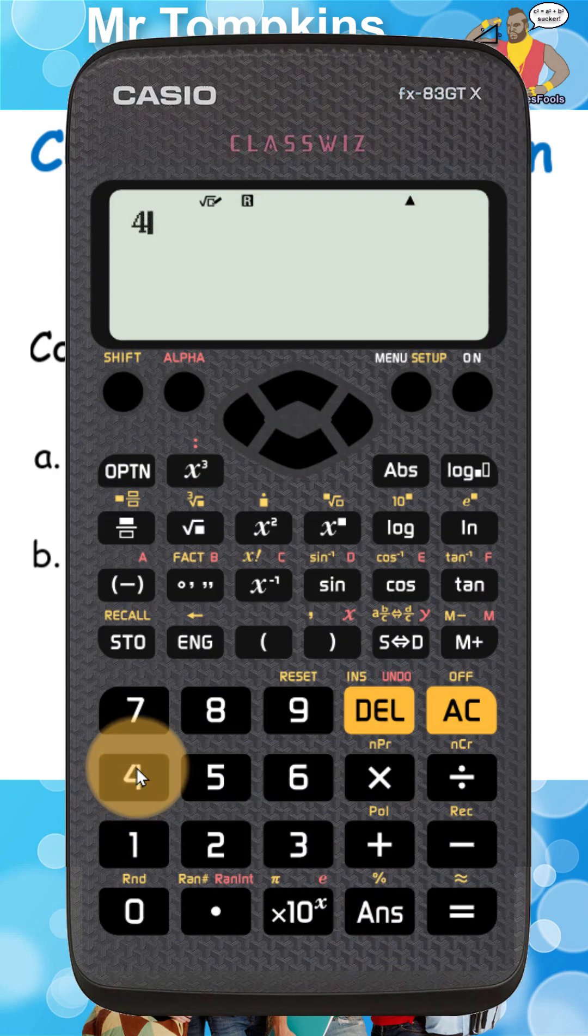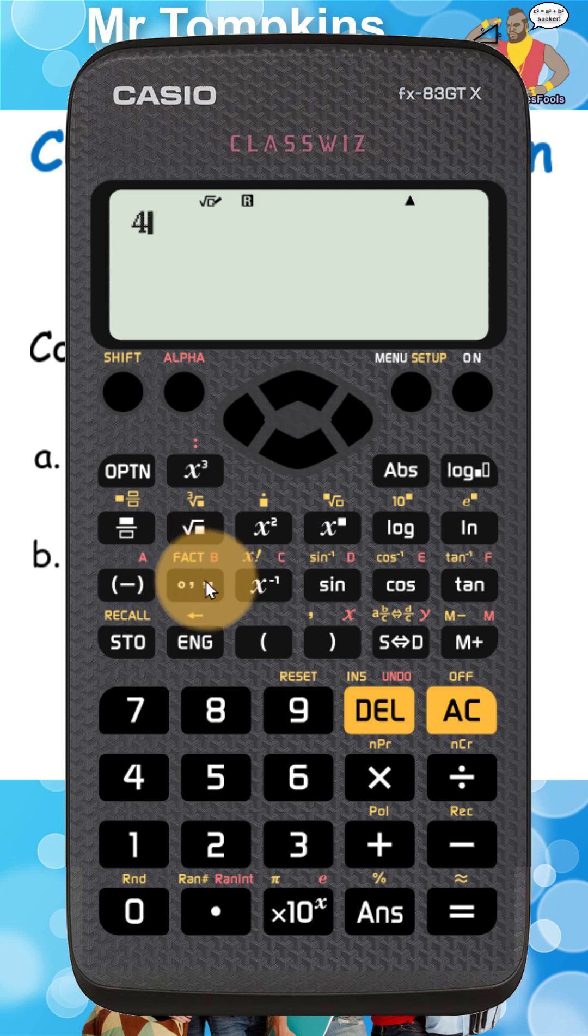In order to do that, I'm going to press the 4 from the 4 hours in first. And then I'm going to use this time key here. Now it looks like a little circle followed by an apostrophe followed by a double apostrophe. That's the button we need to press.